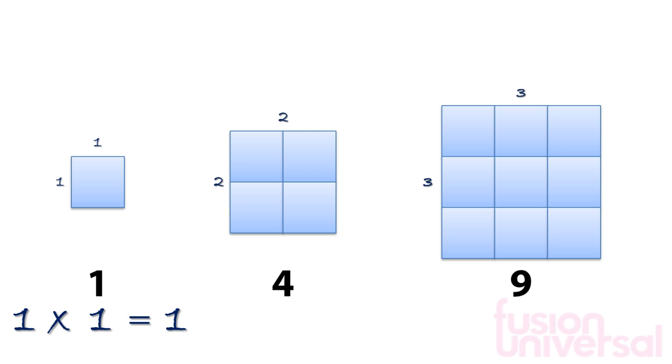The second picture has two rows and two columns. We can see that 2 times 2 is equal to 4. The third picture has three rows and three columns. We can see that 3 times 3 is equal to 9.